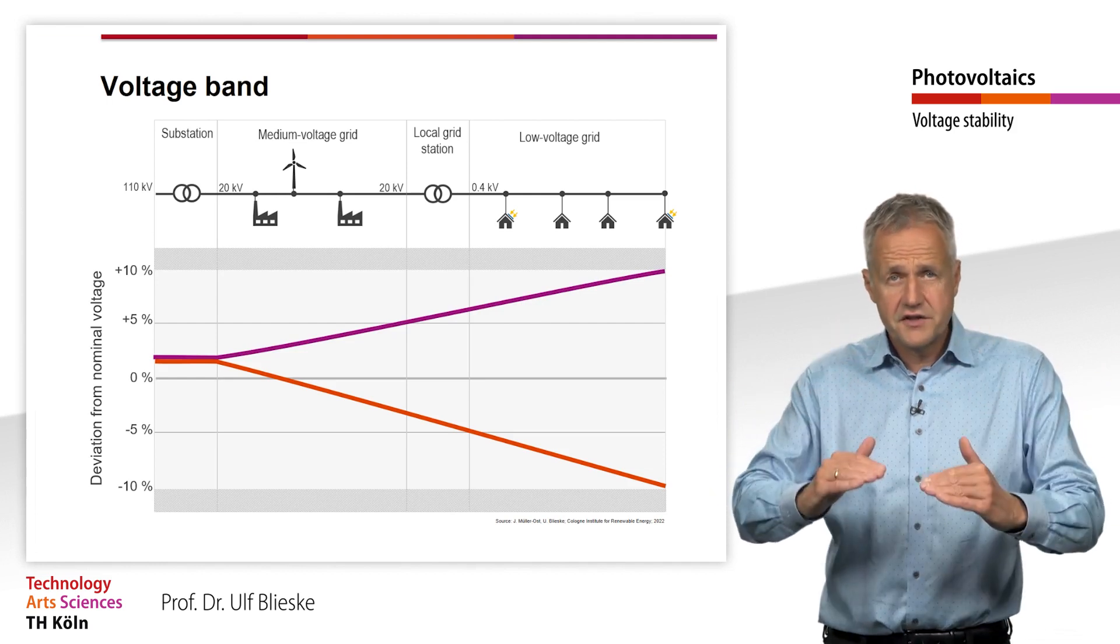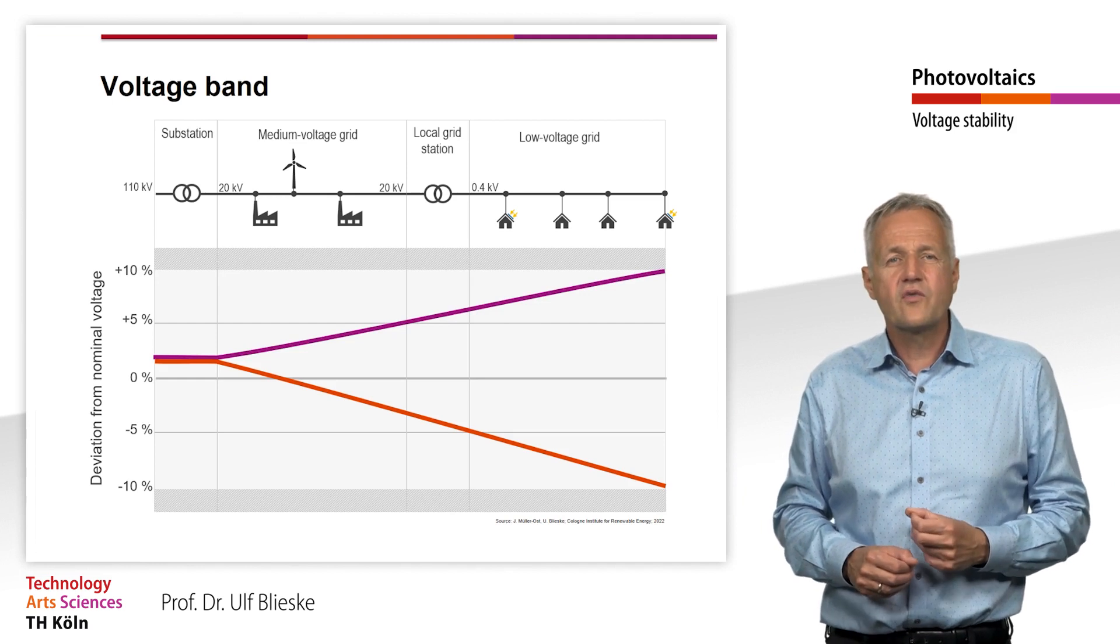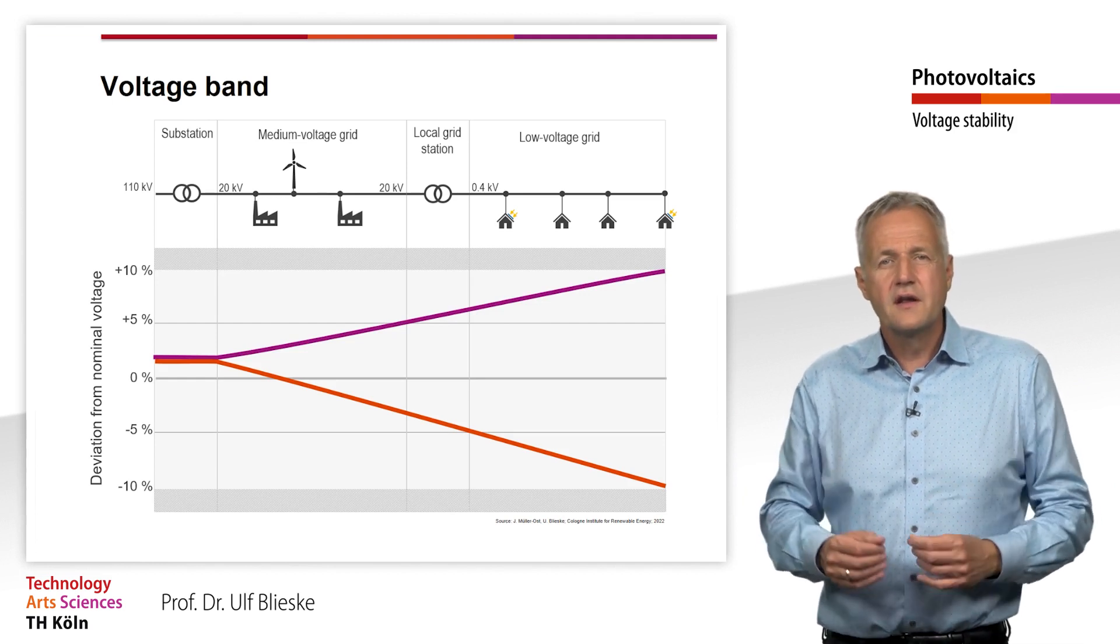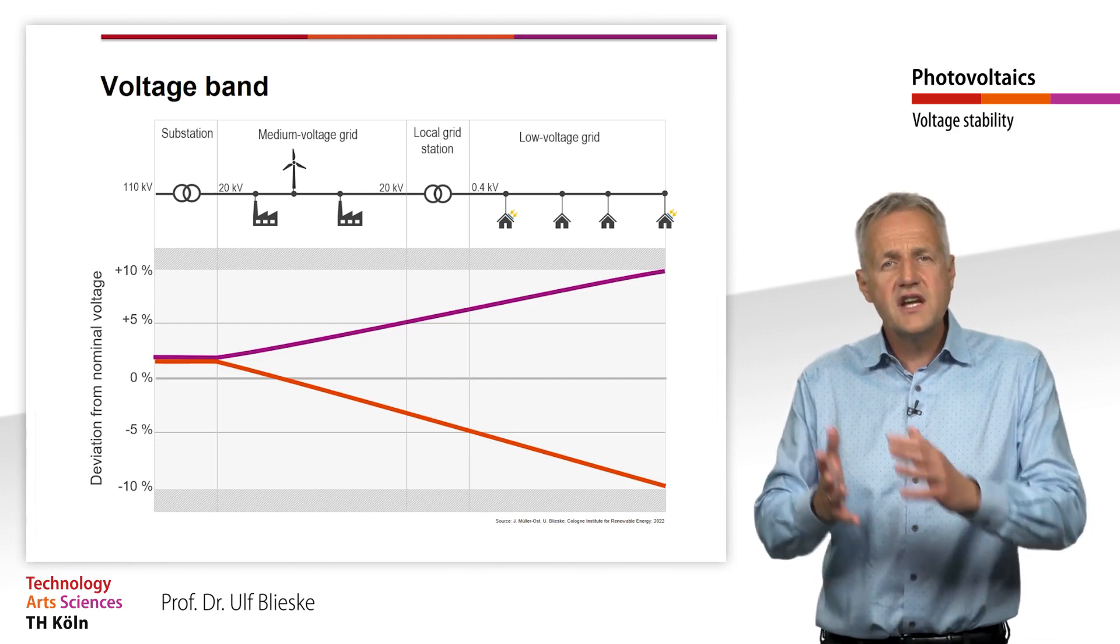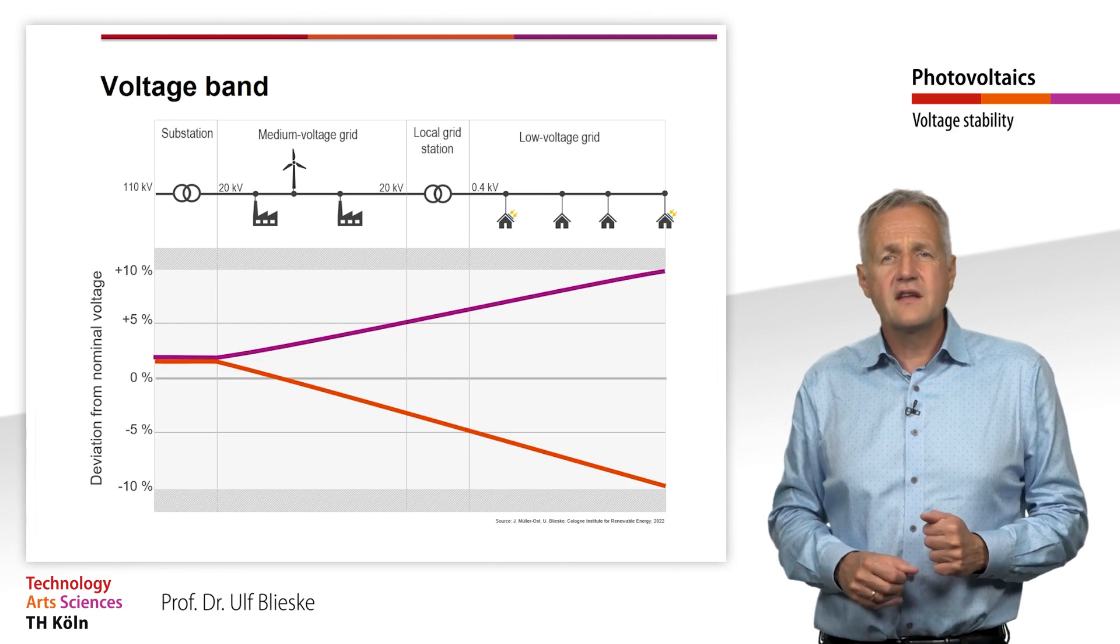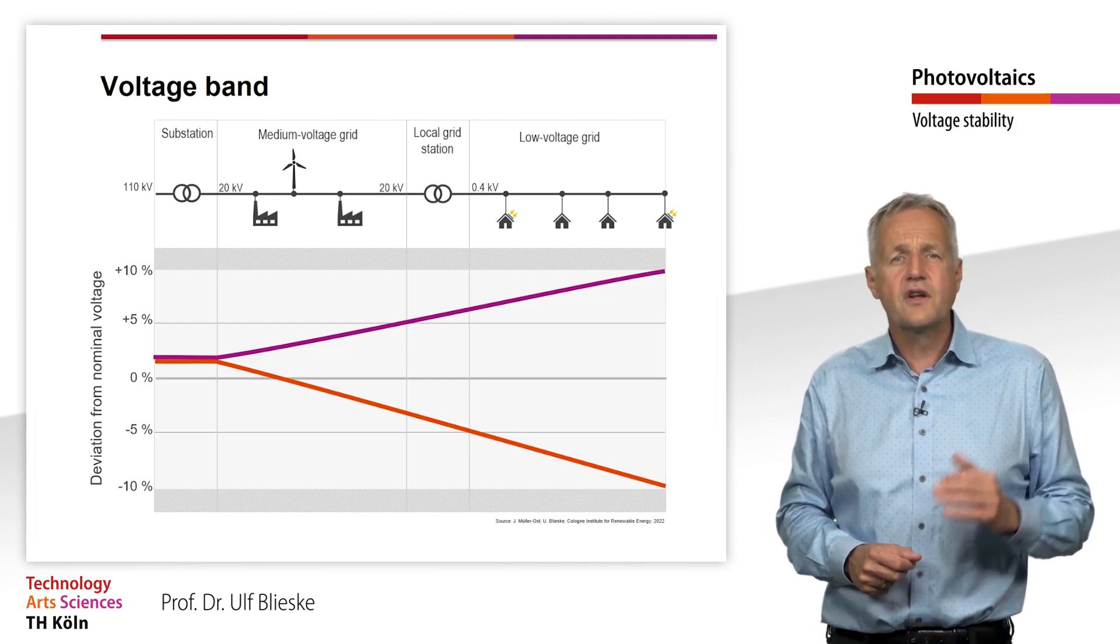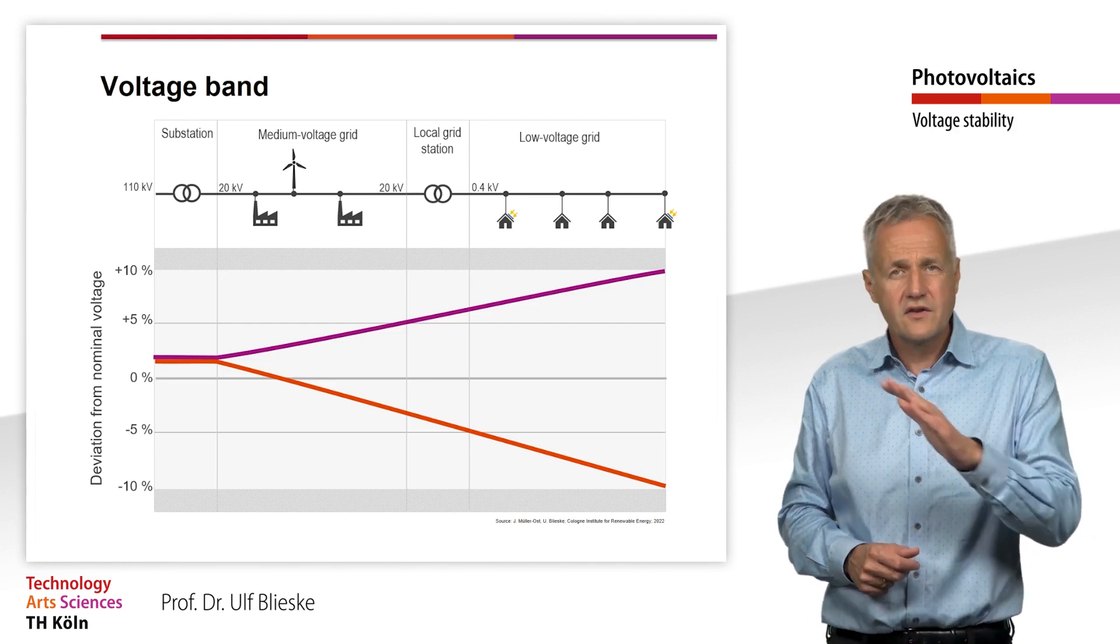Exactly the opposite case occurs when power is not drawn in but fed in. Here, there is a voltage increase at the feed-in point. If the feeding inverter would not set the voltage higher, the current could not flow towards the grid at all.